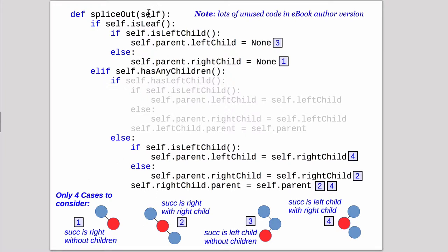So here's splice out. And we don't use this code in the middle because so let's see. So we're splicing out the successor. The successor is the child where we don't have a left node anymore. There's no left child to follow.